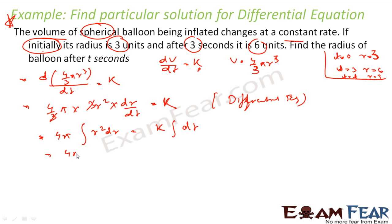Solving the integration, we get 4π · r³/3 = kt + c. This gives us an equation for the radius in terms of t. Now we need to find the values of k and c, since we have two unknowns.